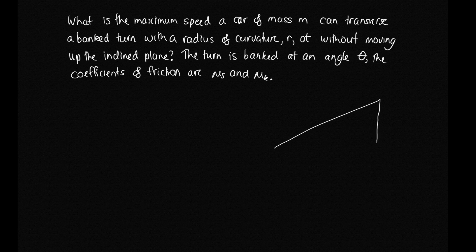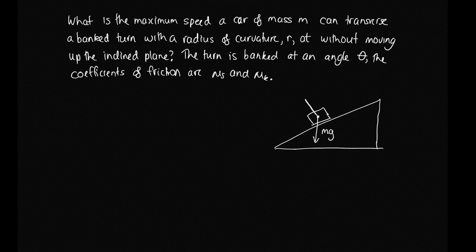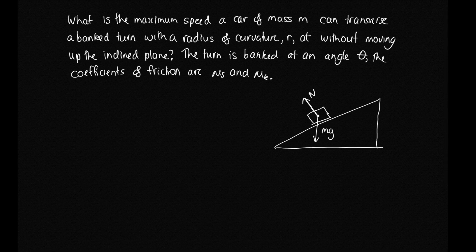Let's draw our banked turn with the car and draw the forces acting on the car. We've got the weight force mg acting downwards, then the normal force N, and the frictional force. We don't want the car moving up the plane, so we assume it's tending to move up the plane and the frictional force opposes that motion, acting down the slope.